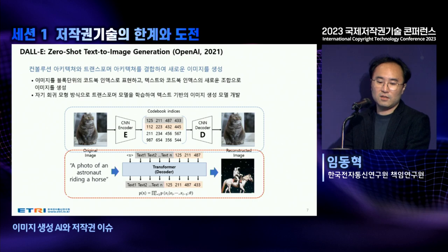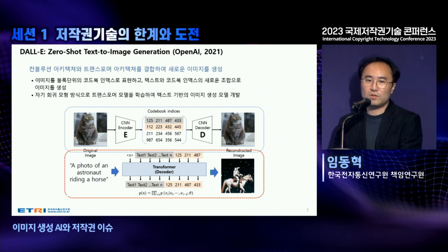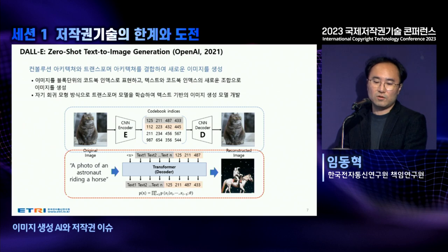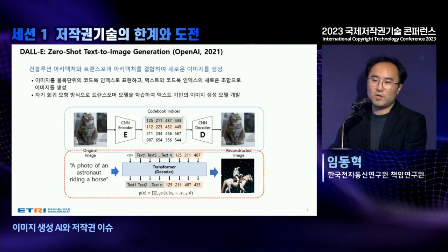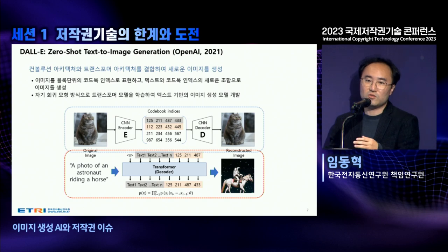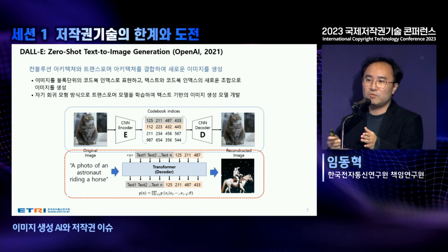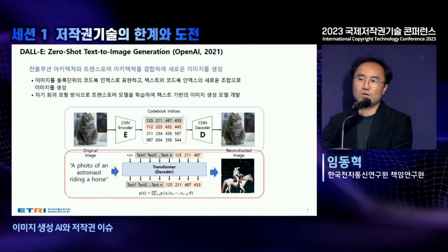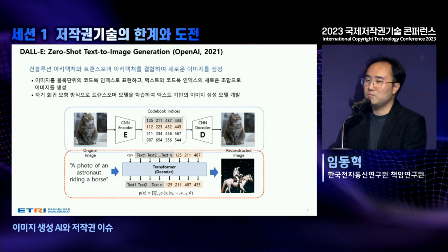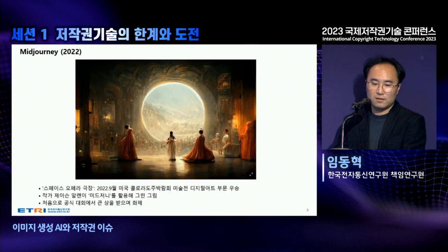The blue-colored elements refer to image compression and decoding. Below, you see the explanation about the image — for example, 'a photo of an astronaut riding a horse.' This text is transformed into an image. It learns data using the same method used by GPT-3. So if you enter a prompt like 'please draw a photo of an astronaut riding a horse,' this kind of image is generated.